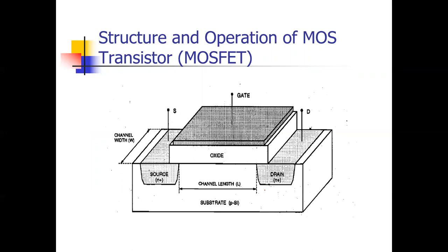This is the structure of the MOSFET. The MOSFET has four terminals: source, gate, drain, and the body terminal. The source is N+, high doping; drain is also N+. Between source and drain is the channel, where current starts to flow. Detailed fabrication we will learn in a further lecture.